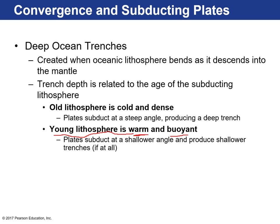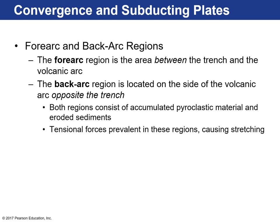Sometimes trenches won't even form if the subduction angle is too low. The forearc is the region between the trench and the volcanic arc; the backarc is behind the volcanic arc. Both regions consist of accumulated pyroclastic material — volcanic in origin — and eroded sediments. Tensional forces actually prevail in these regions, causing stretching.